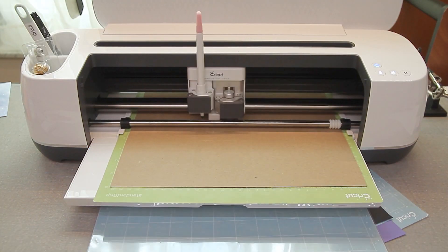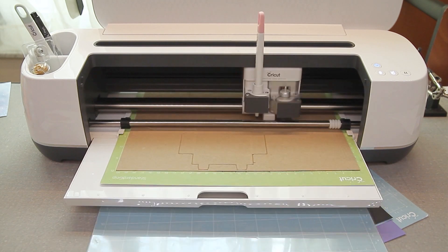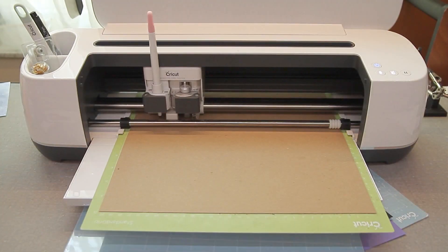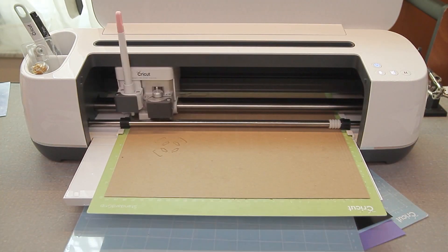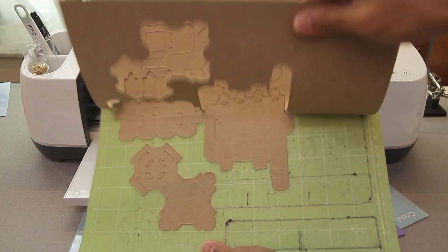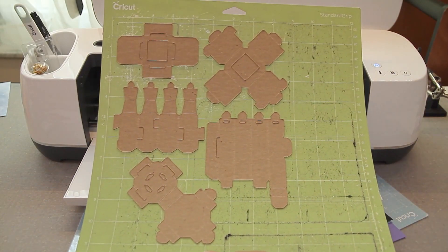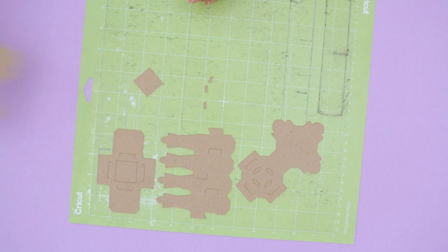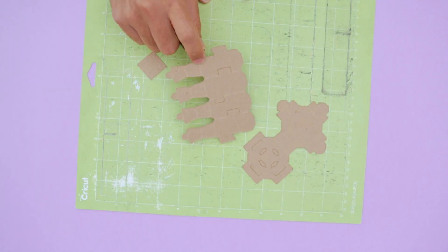We used a vinyl cutter to cut our design out of medium weight chipboard. These cutting machines can make precise cuts that are great for making intricate designs. They can also score fold lines which makes this a nice alternative to a laser cutter. Each piece is removed from the adhesive cutting mat.